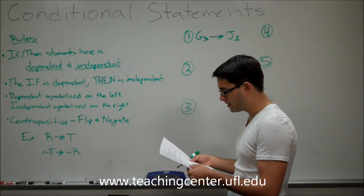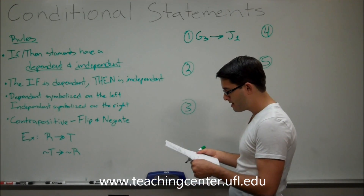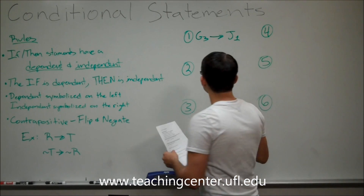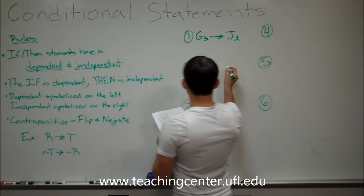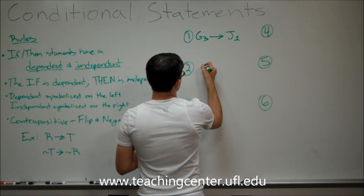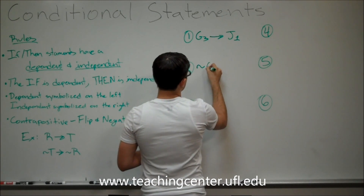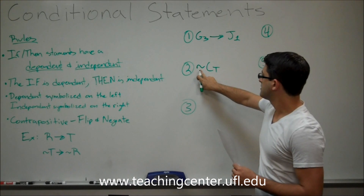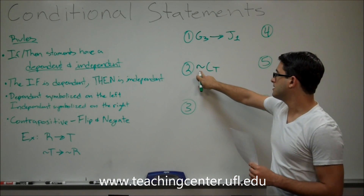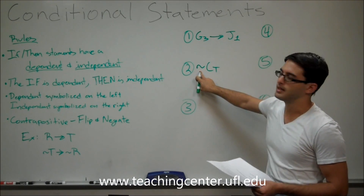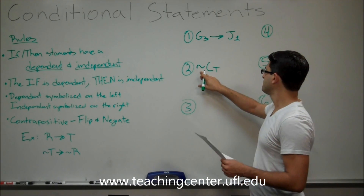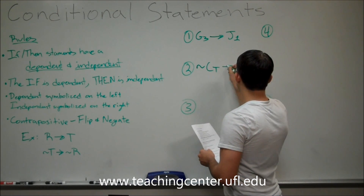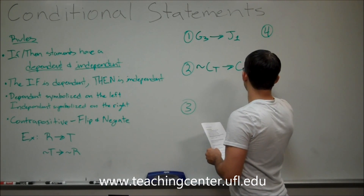Problem two: if Carl does not go on Tuesday, then he goes on Friday. The if is on the left side. The tilde is the negation sign — a not sign. So if Carl does not go on Tuesday — symbolized with a tilde C-Tuesday — then he goes on Friday.